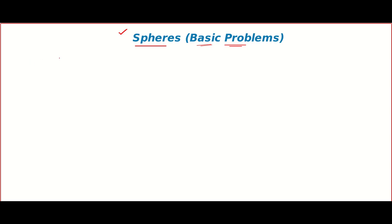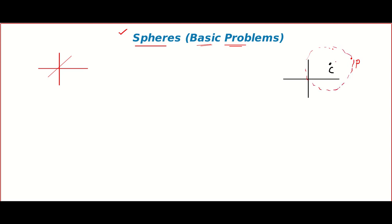First of all, you have to understand that in three dimensions particles have three degrees of freedom. You might remember how your teacher derived the equation of a circle when you were in class 8, 9, or 10. They fix a point called the center, then take random points such that the distance between the center and those random points is the same — that constant distance is called the radius.